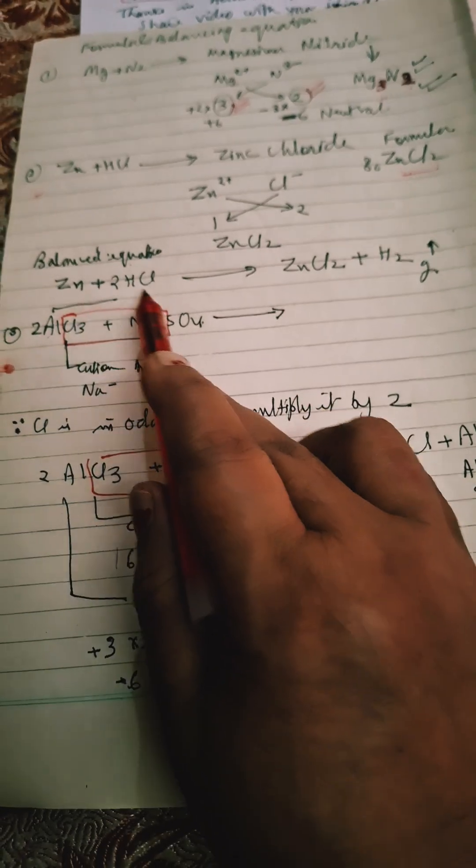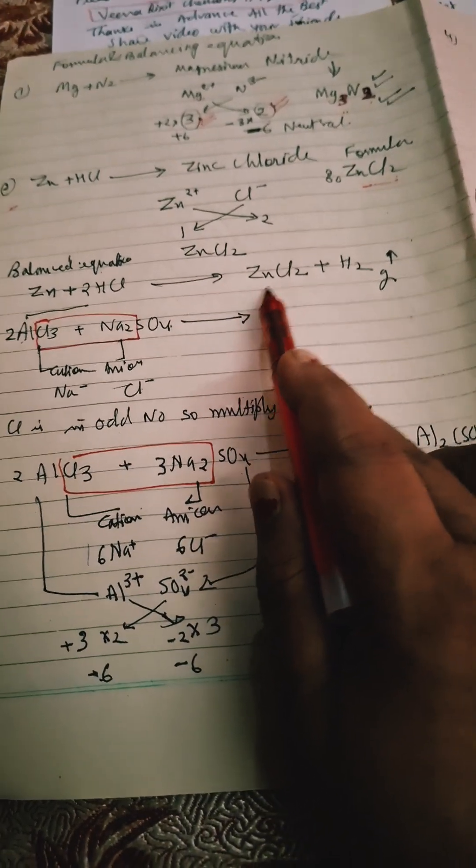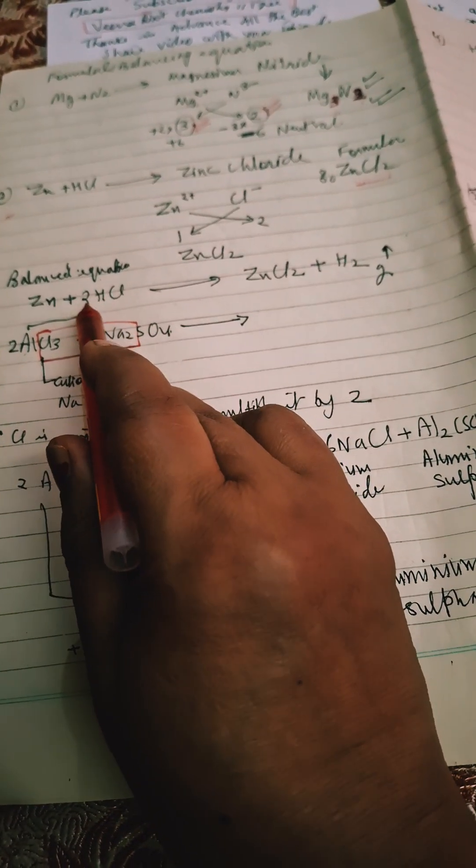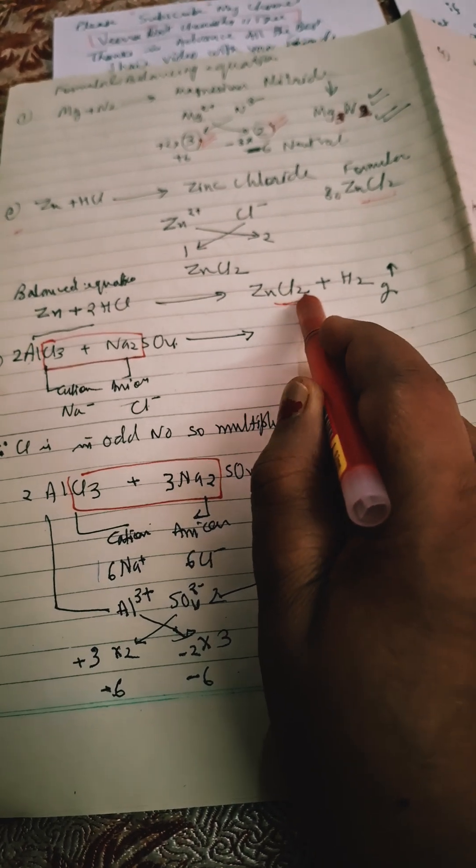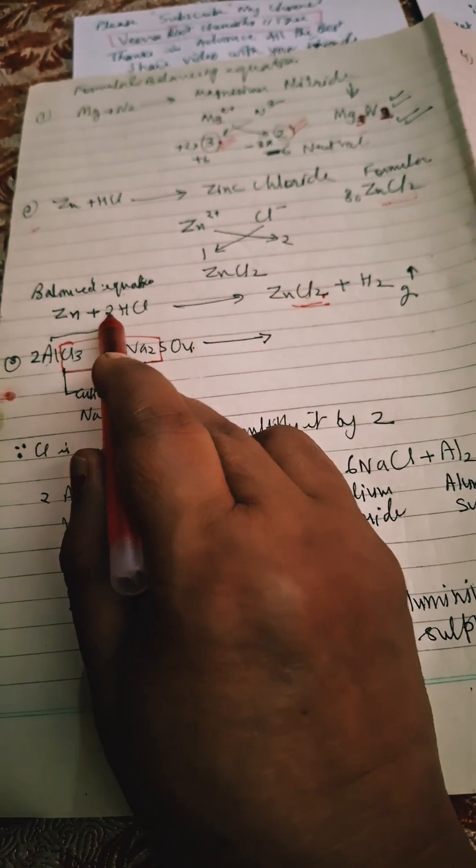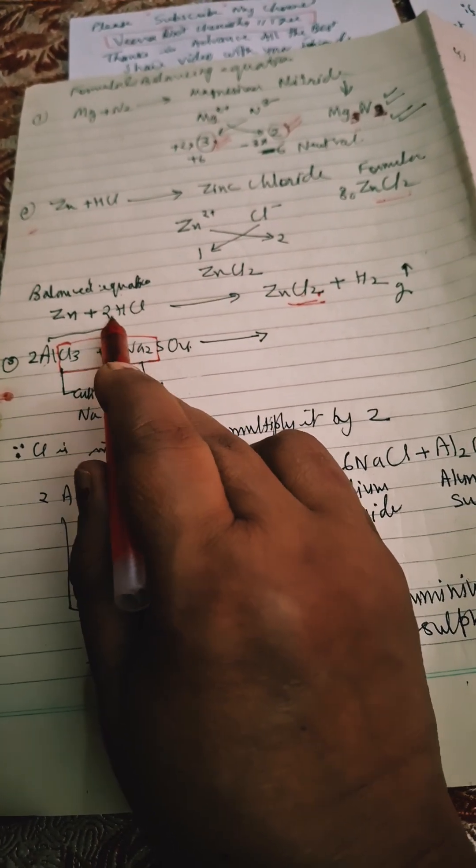Now the complete equation will be Zn plus HCl gives you ZnCl₂ plus hydrogen. When we multiply this, there is ZnCl₂, so there are Cl₂, so multiply this by 2. And now here H₂, twice, so we have to write hydrogen gas. This is displacement reaction.